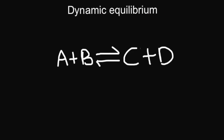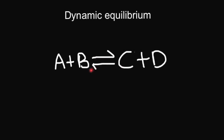Dynamic equilibrium is reached when the forward reaction equals the backward reaction. Imagine you started off with a load of A and a load of B. Initially, you have no C and D. So the only reaction that's going to take place is A bumping into B — the forward reaction. After a while you're going to end up having some C and D, so the chances of those two colliding with the correct activation energy increases. At some point, there's going to be a situation where the rate of C and D forming is going to be the same as the rate of A and B forming. And that is your dynamic equilibrium.